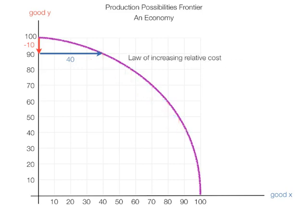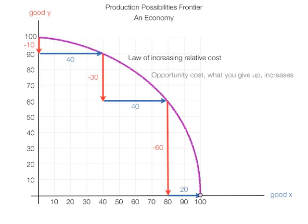Let me explain this again a different way. At that level of production where the gray dot is, how much Y does the economy have to give up to move to the next point? It has to give up 30 to get 40X. Now, if the economy gives up 60Y, it only gets 20X. The economy has to give up more and more Y to get the same X. Opportunity cost — what you give up — increases. You have to give up more Y to get the same X.